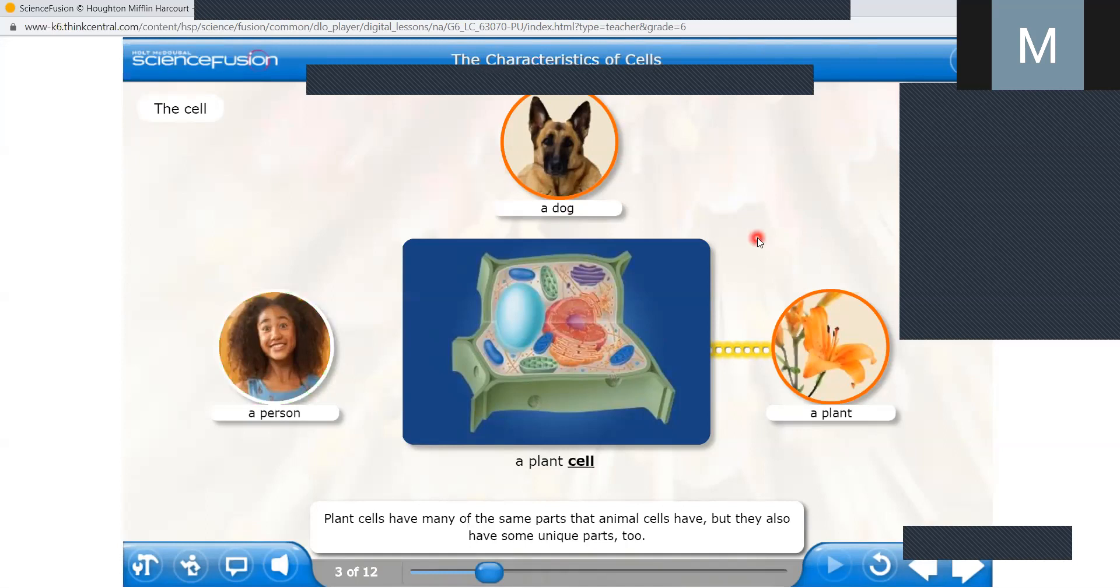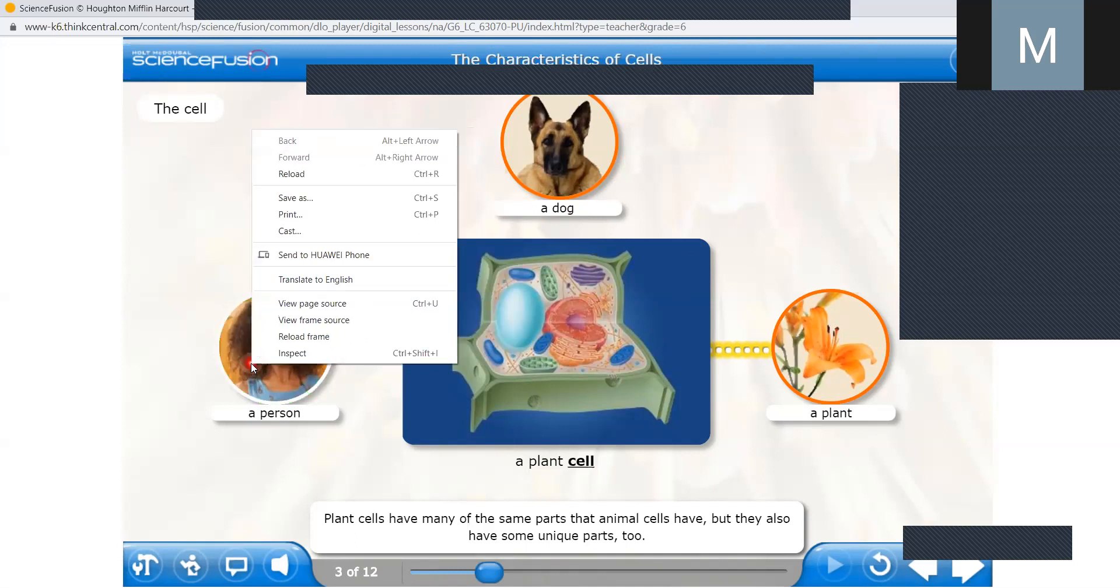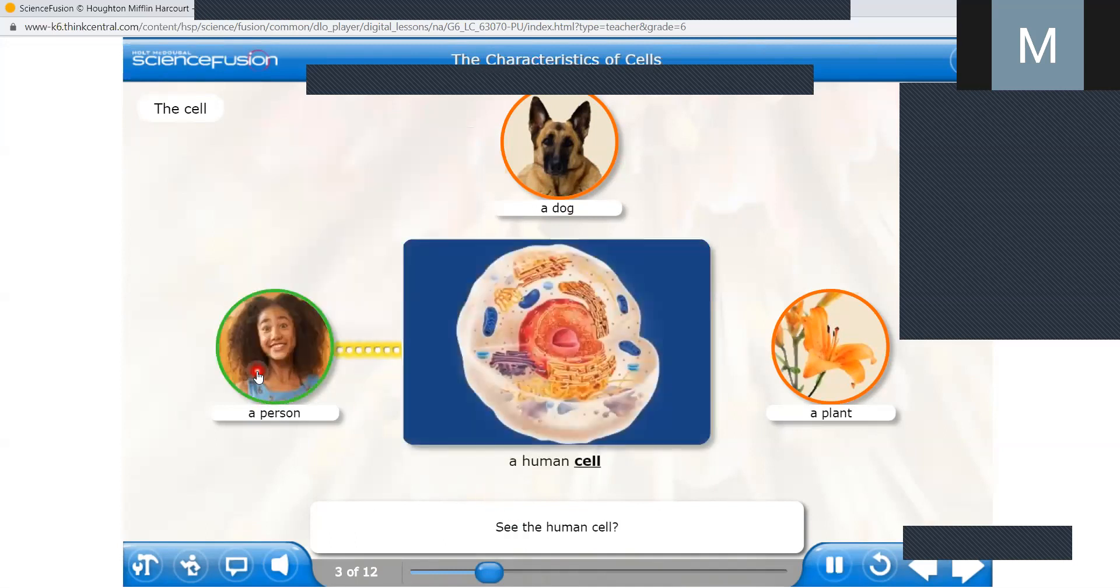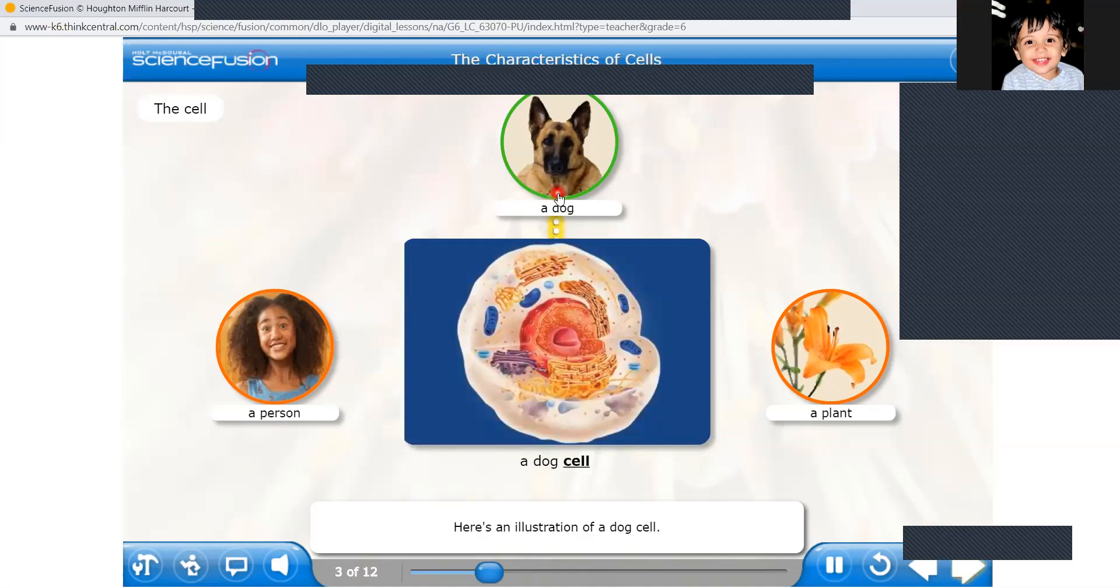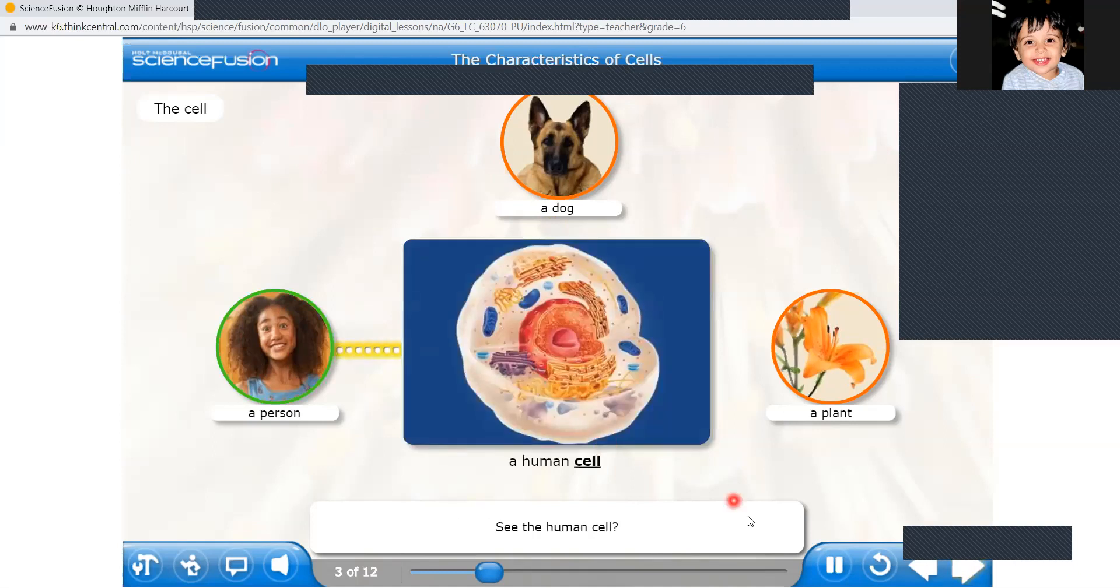See the human cell. Which cell does it look most like, the dog cell or the plant cell? Click those photos to check your answer. Tell me, which cell does it look like? It doesn't look like a plant cell or an animal cell? Animal cell. And let's click this. There's an illustration of a dog cell.